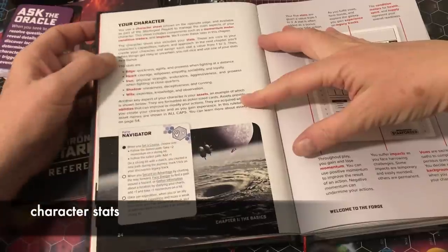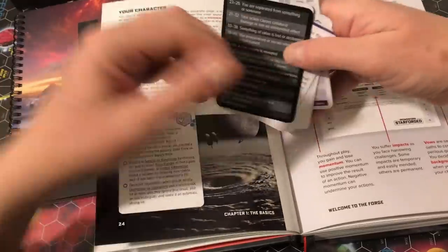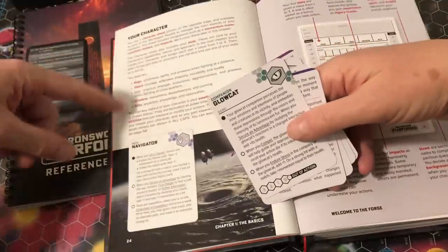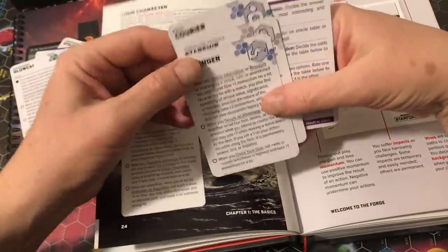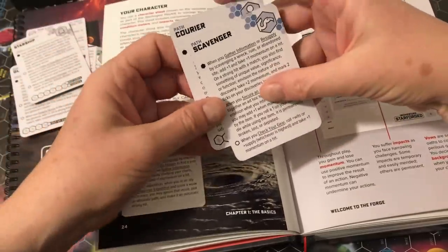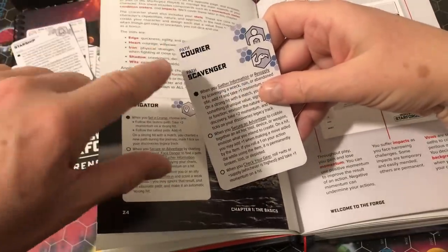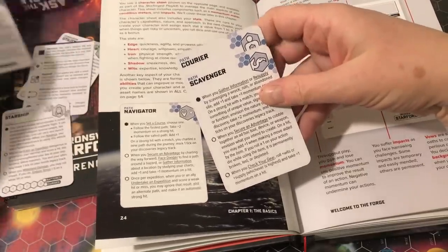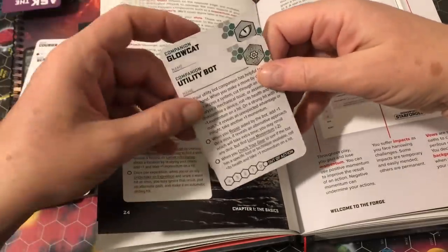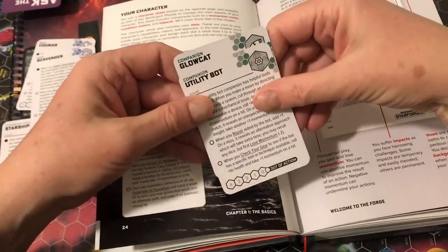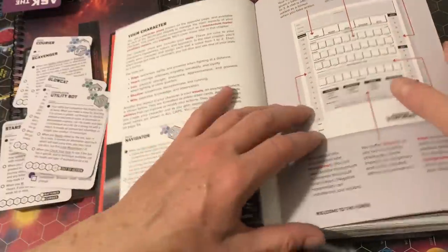The characters have stats: edge, heart, iron, shadow, and wits. They also have assets, and this is where the cards come in. So your character is a combination of the stats that you have and the assets that you have. The assets include a starship for this game. They include two paths that you go on that are essentially background motivators for your character. I chose to play a courier and a scavenger. And then you also get a companion option. In my case, I actually chose two companions, a Glowcat companion and a utility bot.